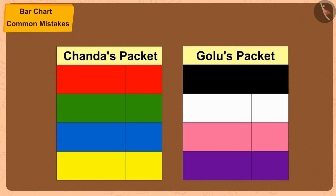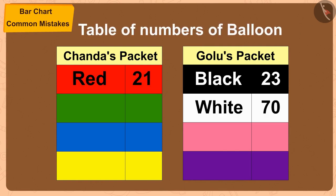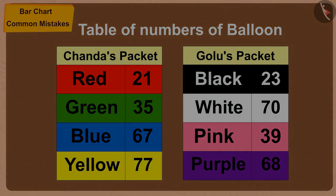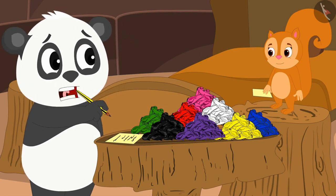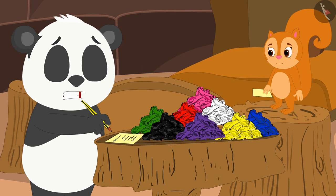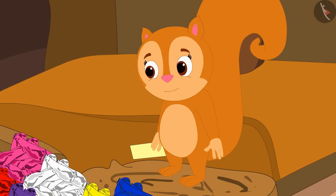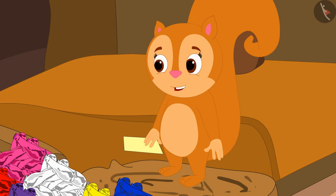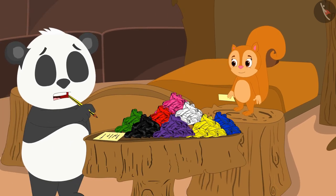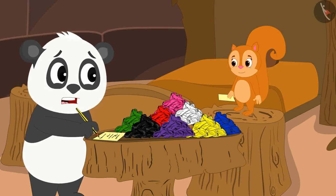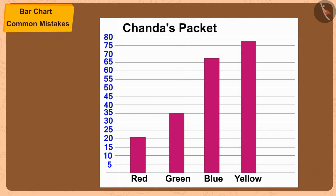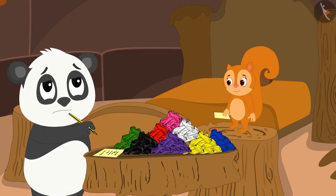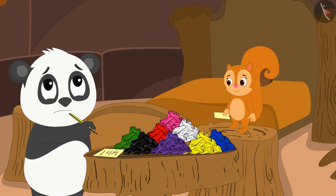Both Gulu and Chanda made such tables by counting the balloons in their packets. Chanda, there are so many numbers here — my head is spinning looking at it. Can we do this in some other simple way? Yes, we can show this information in a very simple way by making bar charts. That would be nice. Let us both make bar charts from our respective tables. Chanda quickly created her bar chart, but Gulu is stuck after making an incomplete bar chart.